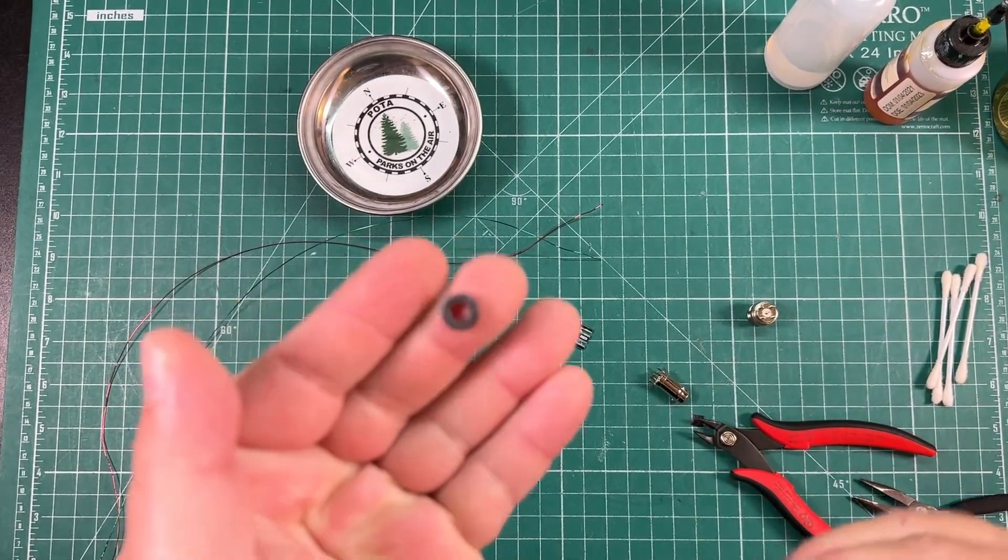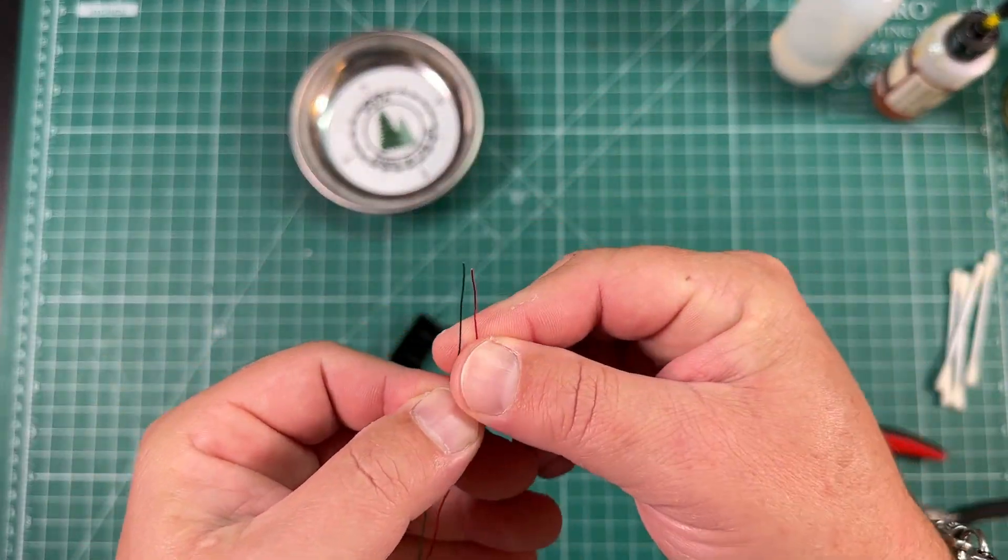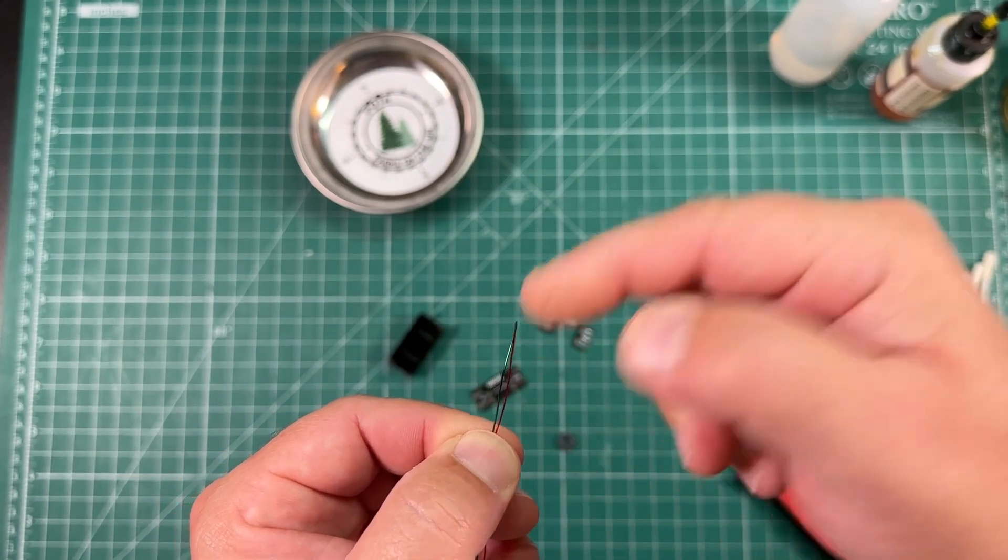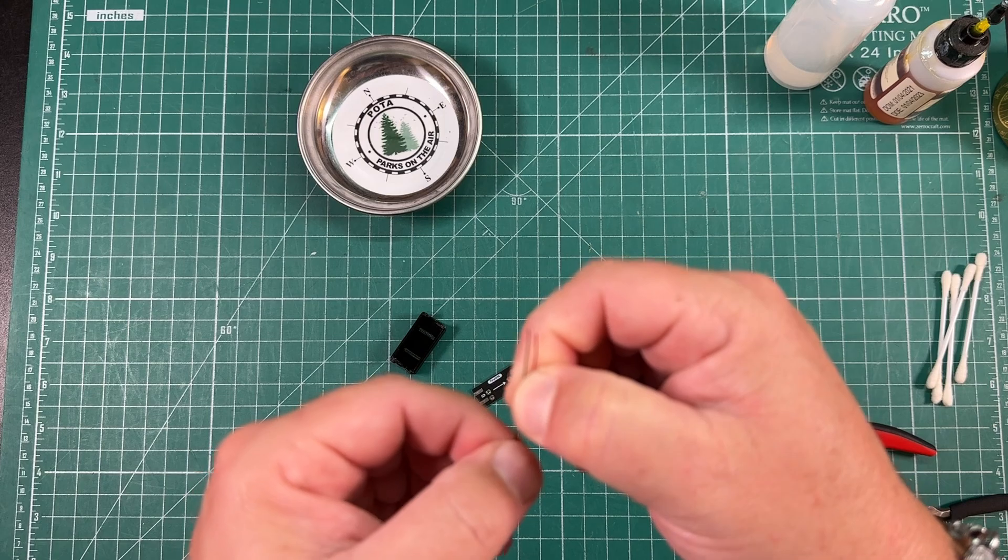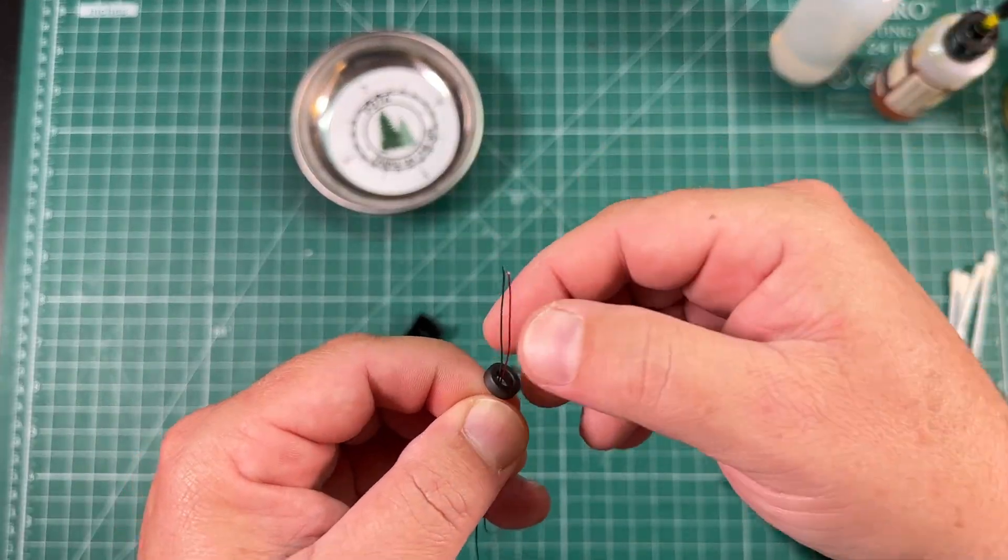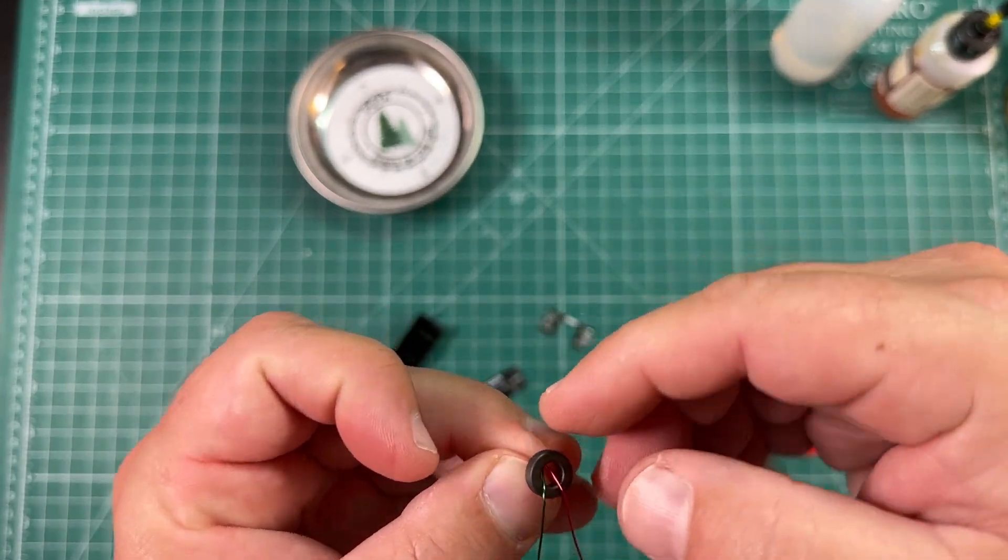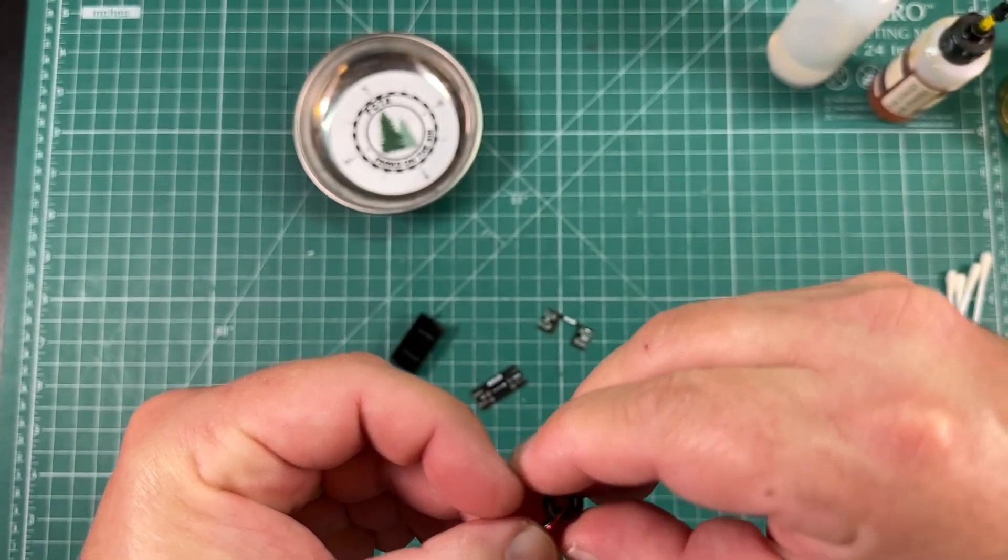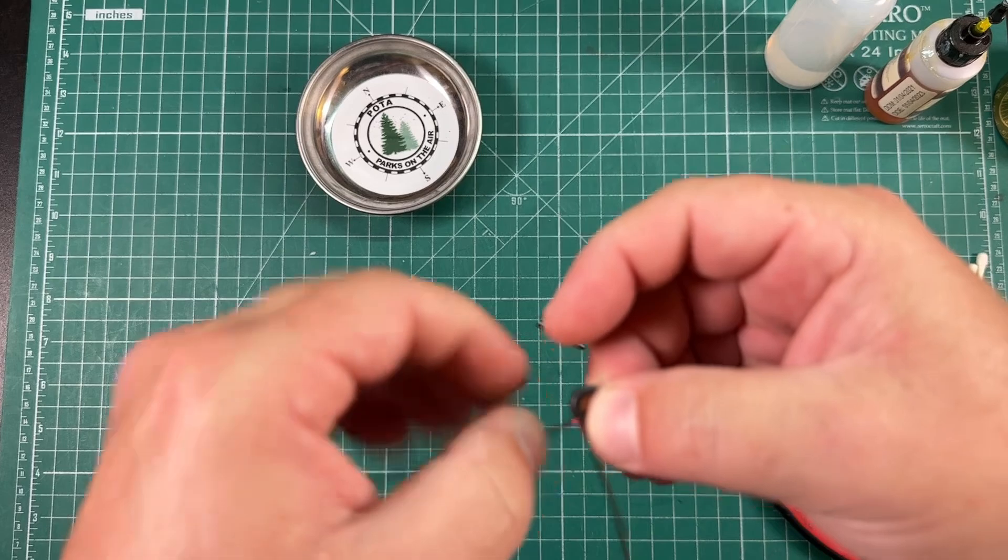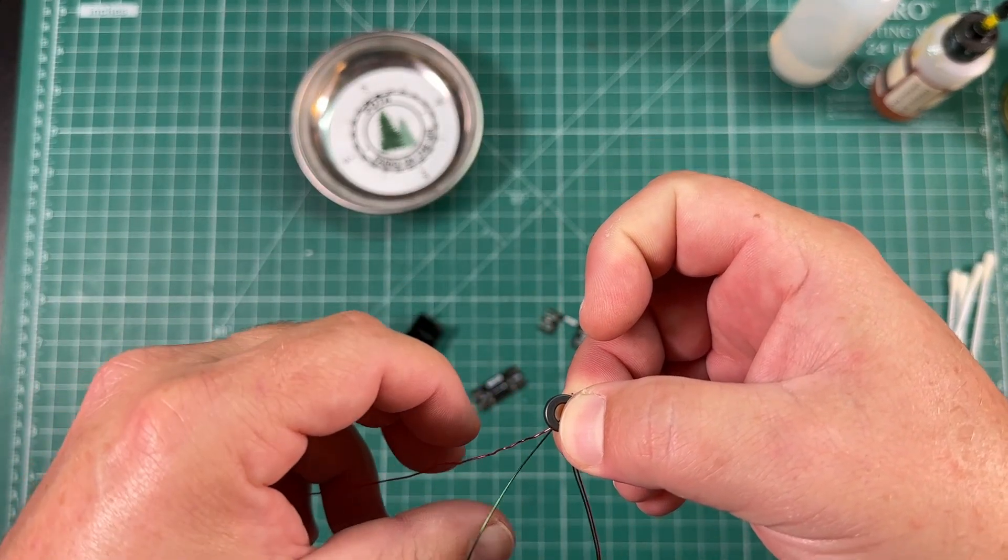Next, we're going to wrap our toroid with these wires. We don't want to cross these wires, we want to keep them in the same orientation. I'm going to do the red on the right and the green on the left, and we're going to try and keep that throughout the whole process. This toroid is tiny. We want to leave a couple inches out, and then we can start wrapping.